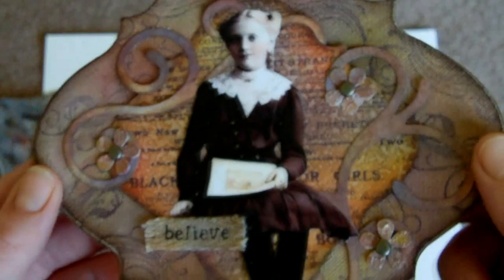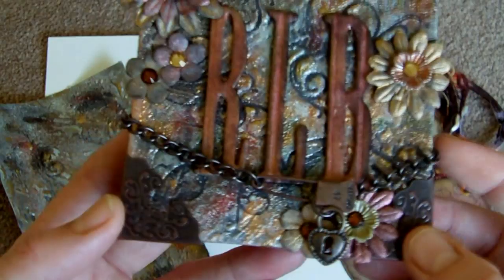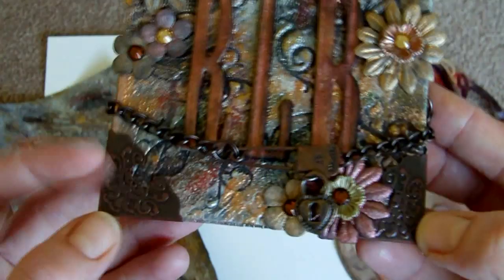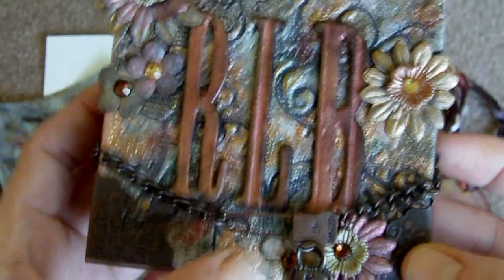The second thing I've done is to make a post-it holder, so there's little post-it notes inside there. Just used it to cover, added some Ideology corners, some little flowers sprayed with MoonShadow mist, and some grunge board which has got my initials on, and some chain held together with a trinket pin. So I hope you like that as an idea and I hope you try the technique. Bye!